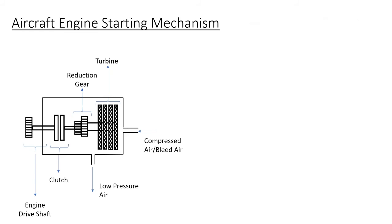Bleed air can be provided by the APU, but the APU is often not turned on, as discussed in the GPU lecture. The next option is the main aircraft jet engine — if any one of the main engines is running, it can provide bleed air to the air starter motor of another jet engine. But both main engines are turned off when an aircraft is parked at the bay. This is where the Air Start Unit plays its role: it starts one of the main engines, which then turns on the other main engine, and the aircraft is good to go.